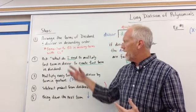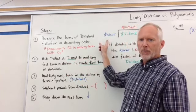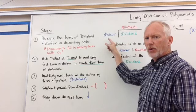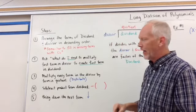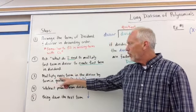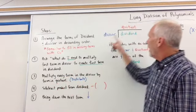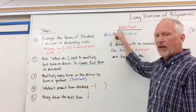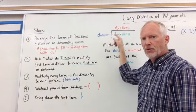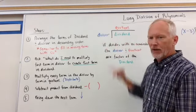Secondly, after I've arranged it, I ask myself, what do I need to multiply the first term in my divisor to get the first term in my dividend? What do I need? What can I multiply this x or something by to create that x? Step 3, we multiply every term in the divisor by the term in the quotient. Once I get this quotient, what do I need to multiply this by to get that? Well, this value here. Then I multiply this quotient into the divisor, and then I will list it below my dividend.